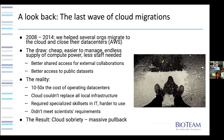The draw back then was cheap, easier-to-manage, endless compute power, the thought that you needed less staff, lower total cost of ownership, better shared access for external collaborations, and better access to public data sets. The reality, however, was that it didn't save people money — it ended up being 10 to 50 times the cost of operating your own data centers. The cloud couldn't replace all local infrastructure, required very specialized skill sets, was essentially harder to use, and didn't really meet scientists' requirements. The result was what Adam coined 'cloud sobriety' — people sobered up, and there was a massive pullback, with everyone going completely back to their data centers.